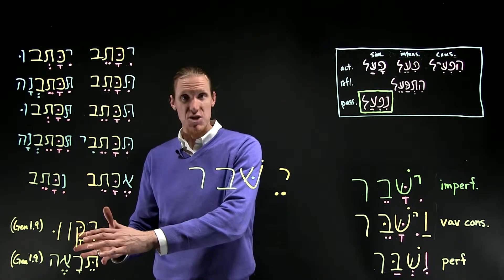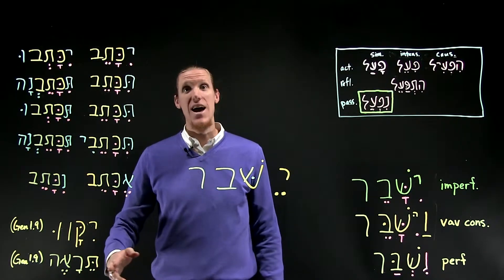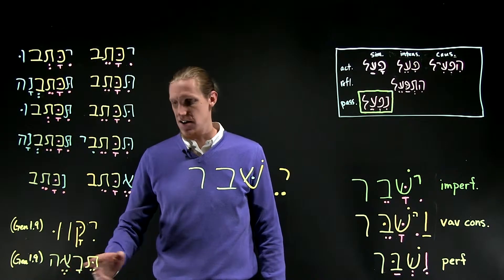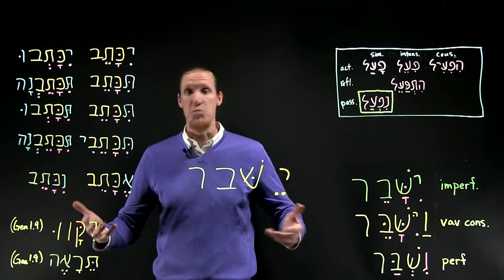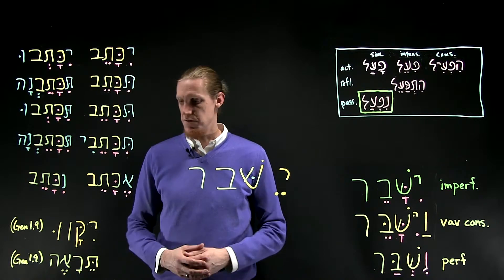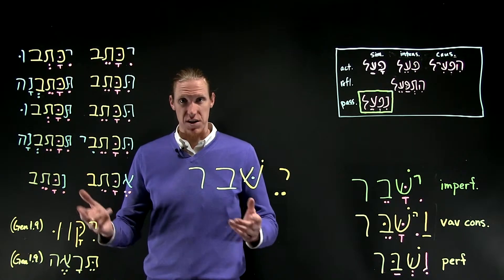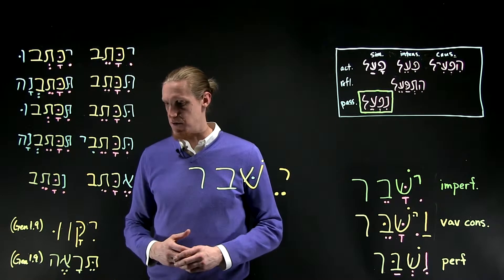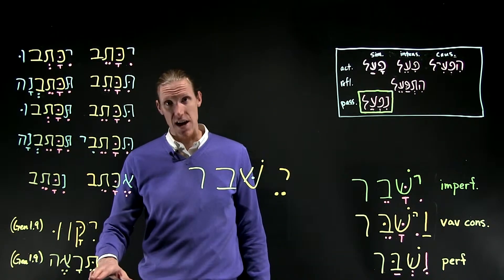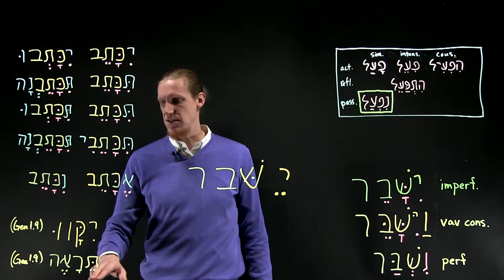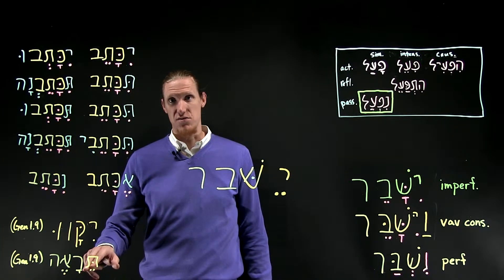We also have another example from Genesis 1:9 of compensatory lengthening — of the dagesh being rejected by the resh and tsere-izing the hiriq. Tera'eh — 'let it appear' or 'let it be seen.' It's a feminine imperfect because 'it' refers to the earth, the dry ground. So we have a tsere under the prefix and qamets under the first root letter.